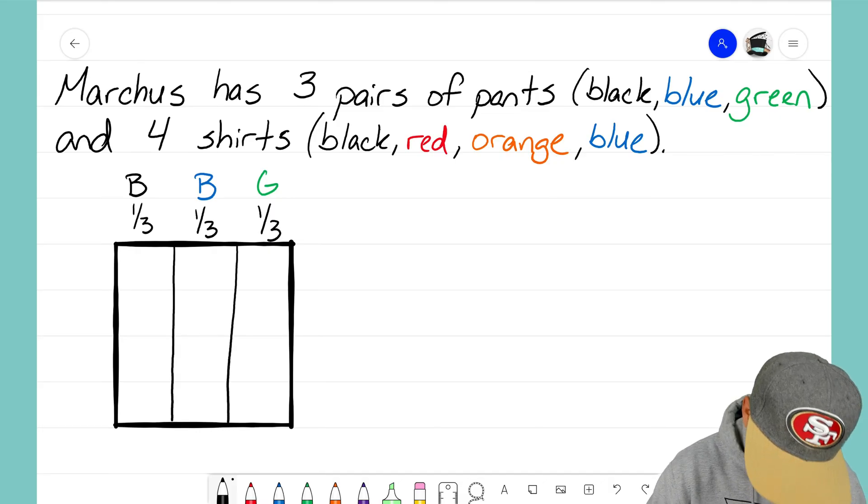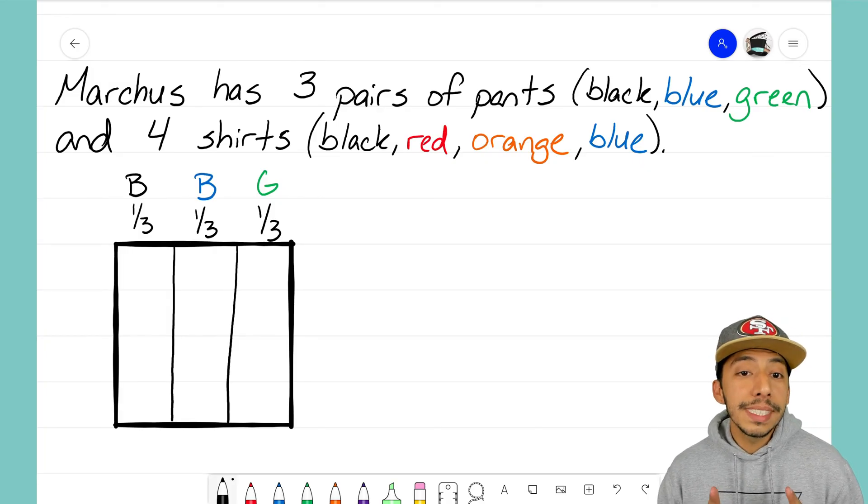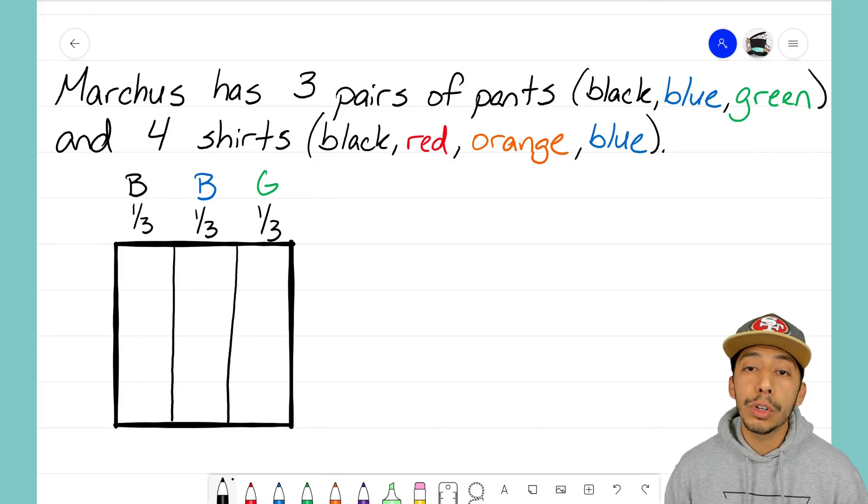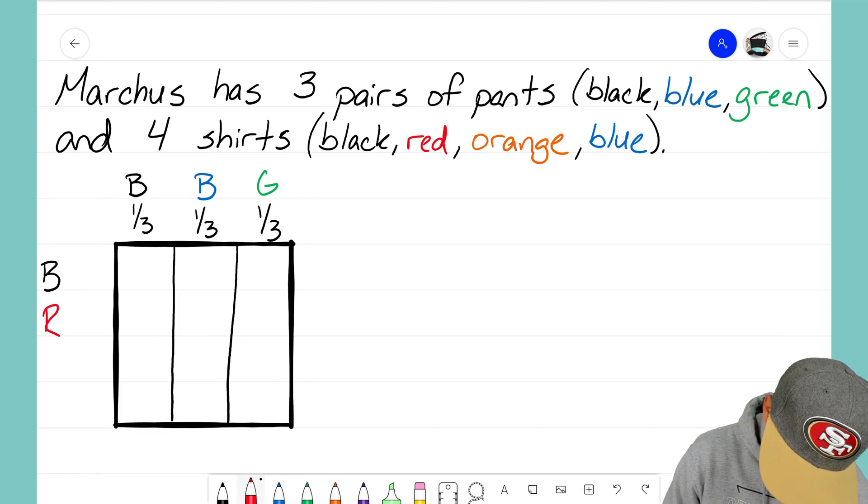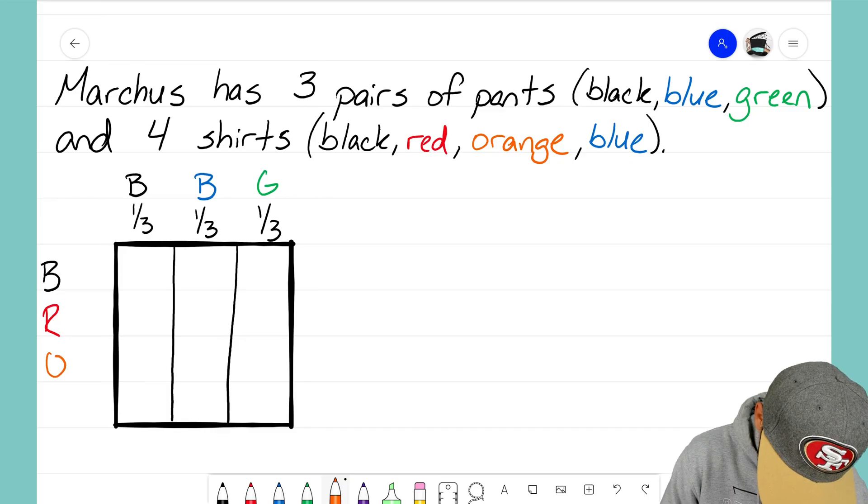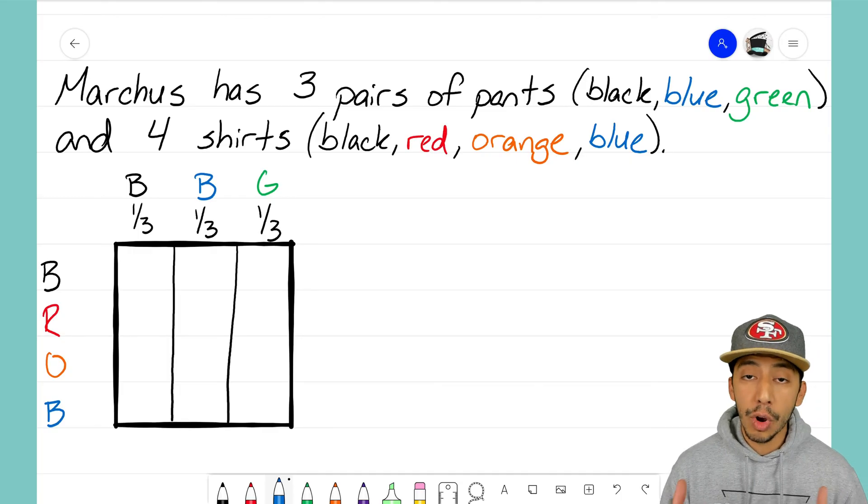We're going to do the same thing now on the left side of that rectangle to set up the four shirts. Again, labeling the side with all my different color combinations. I can either pick black, or I can pick red. The next color is orange, and finally the last one is blue.